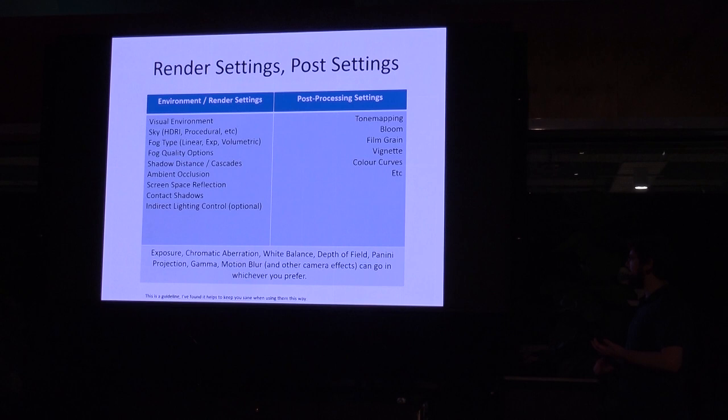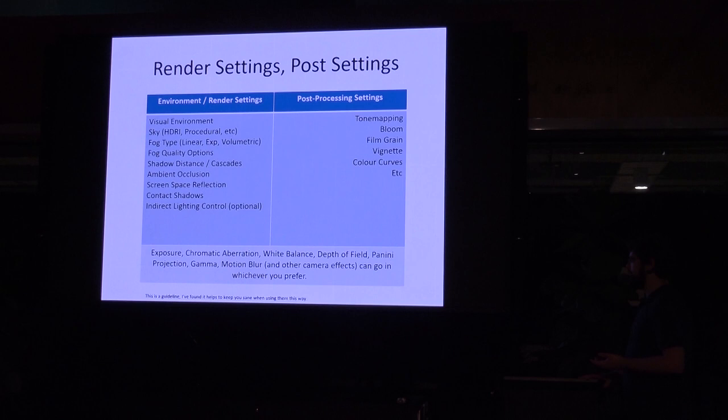Exposure, chromatic aberration, white balance, depth of field, Panini projection — those are really camera options. Unless you've got a good reason to change those, you want to keep them set for the level. Especially your gamma, white balance, and exposure — those shouldn't be changing unless you really need them to.